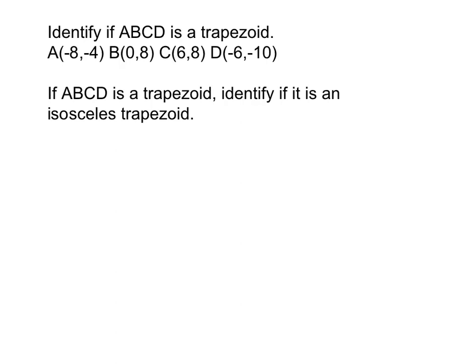This problem is not on your note sheet but it is important to know how to do for your assignment. I'm going to show you, it's kind of like a coordinate proof but what it asks you is to identify if ABCD is a trapezoid. After you've done that, it then asks to identify whether or not it's an isosceles trapezoid.